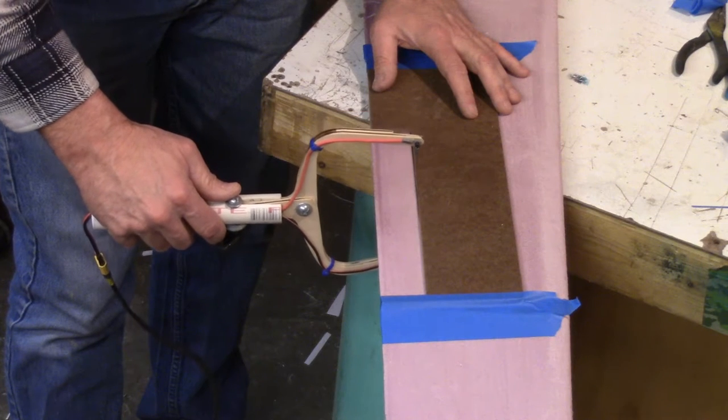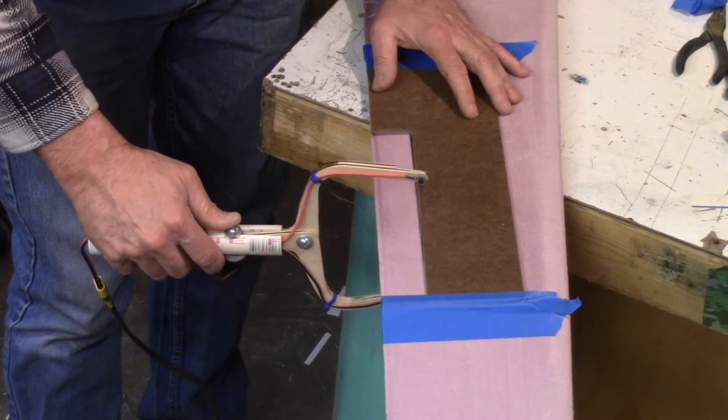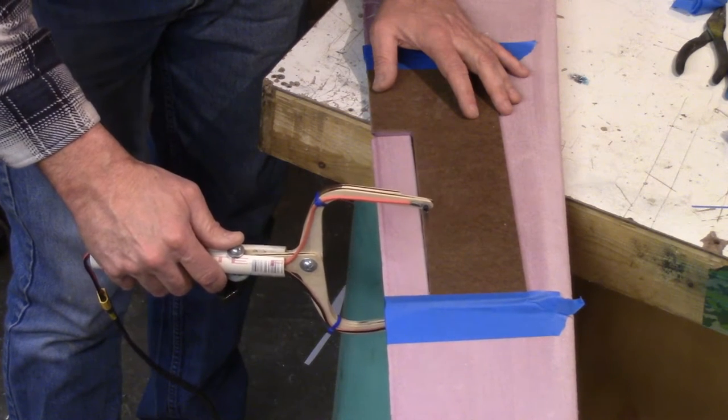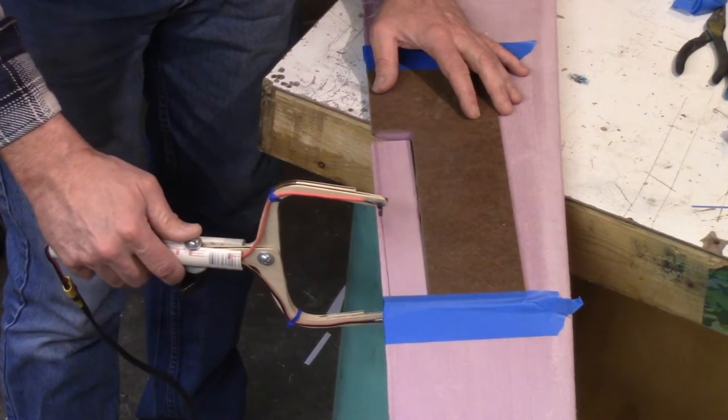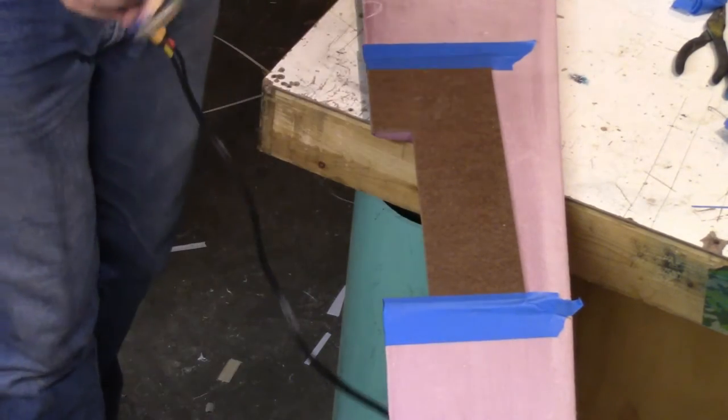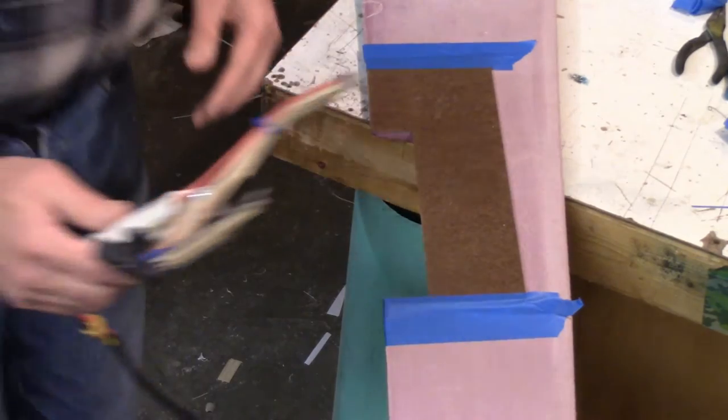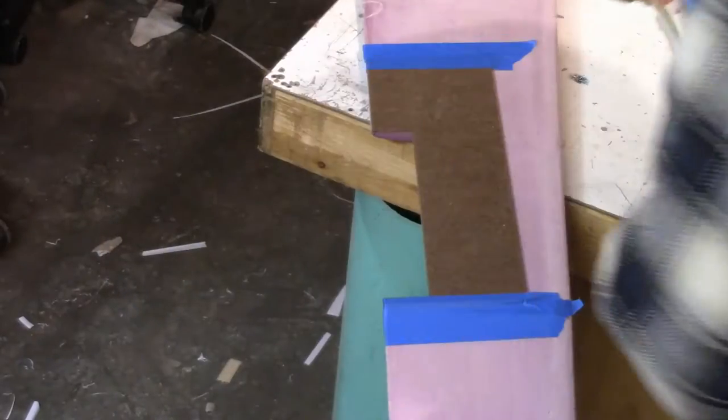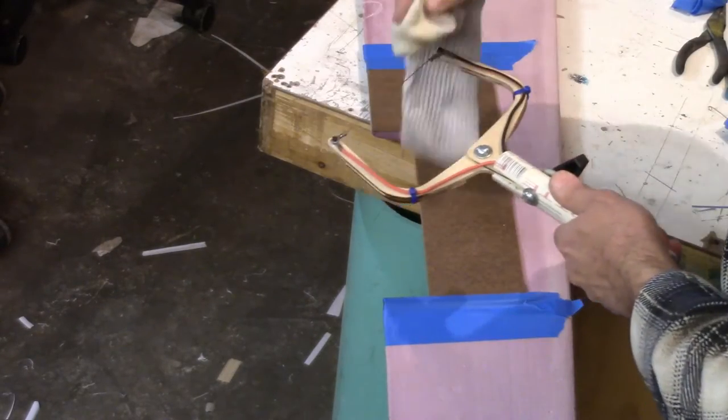As you can see, you just follow the edge, move smoothly along the inside and that's it. You can see how quick and easy it is to cut out an aileron pocket that way.